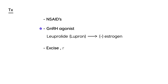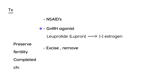The next step in treatment is to excise or remove the lesions, which can be done with a laser or surgical excision. This option is used when preserving fertility is important — when the woman still wants to have children. If childbearing is complete, a hysterectomy is the definitive option, removing the pelvic organs entirely. That's a quick summary of endometriosis.